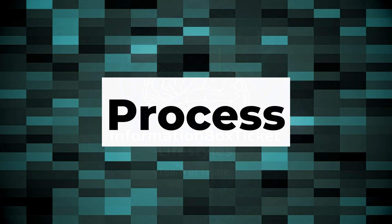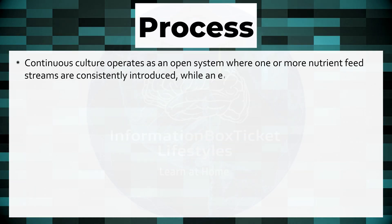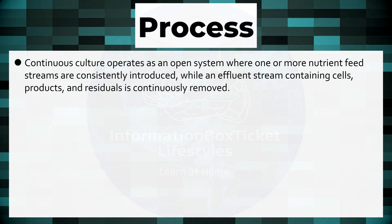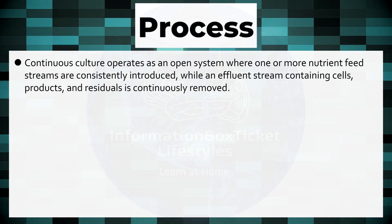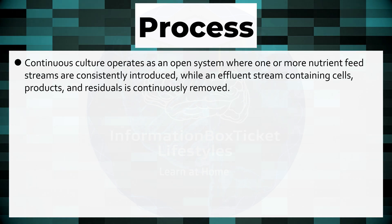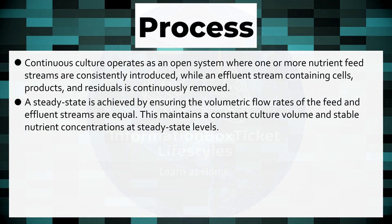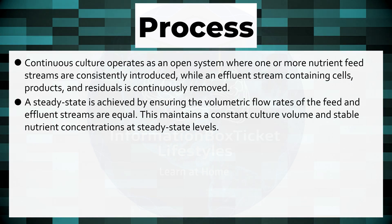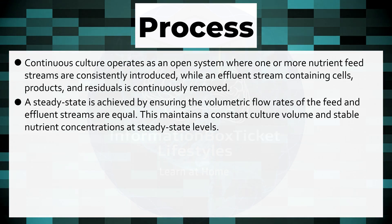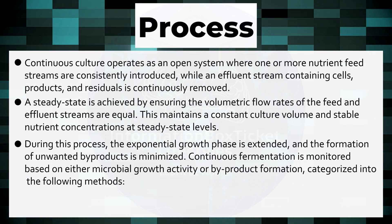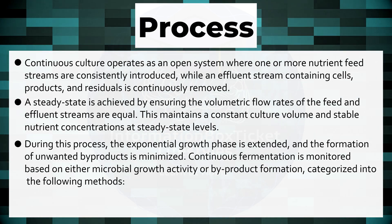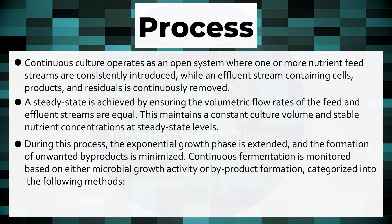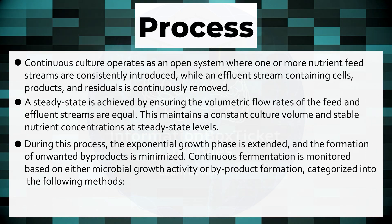Process of Continuous Culture. Continuous culture operates as an open system where one or more nutrient feed streams are consistently introduced, while an effluent stream containing cells, products, and residuals is continuously removed. A steady state is achieved by ensuring the volumetric flow rates of the feed and effluent streams are equal, maintaining a constant culture volume and stable nutrient concentrations. During this process, the exponential growth phase is extended and the formation of unwanted byproducts is minimized. Continuous fermentation is monitored based on either microbial growth activity or byproduct formation, categorized into the following methods.